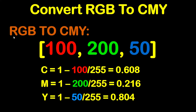To be able to convert from RGB to CMY, we will do the following. To get the cyan component, this will be equal to 1 minus the red component, which is 100 in this case, divided by 255. This will give you 0.608.